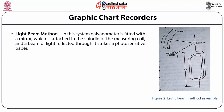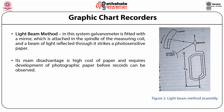E. Light beam method: A galvanometer is fitted with a mirror attached to the spindle of the measuring coil, and a beam of light reflected through it strikes a photo-sensitive paper. This method works well at higher frequencies and allows relatively higher chart speeds without compromising resolution. Its main disadvantage is the high cost of paper and the requirement to develop the photographic paper before records can be observed. This method is not suited for real-time monitoring.